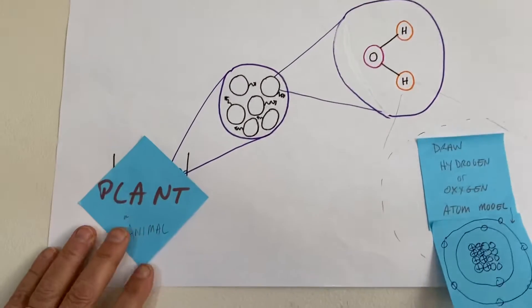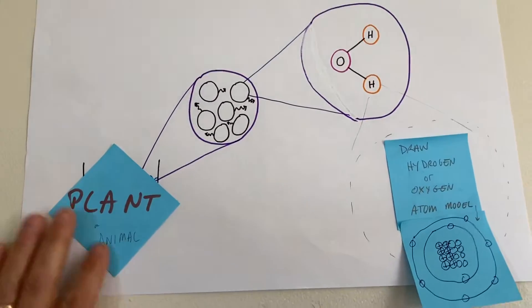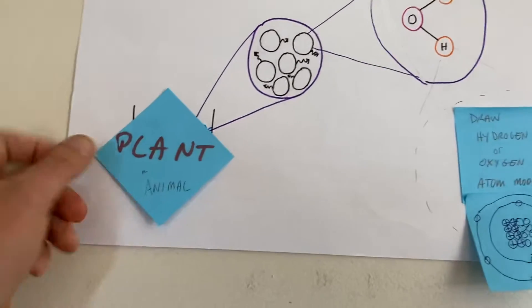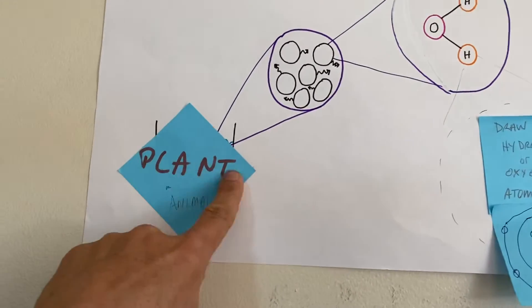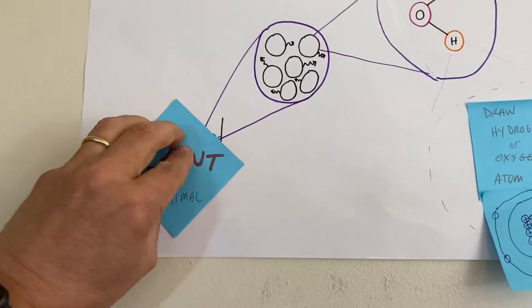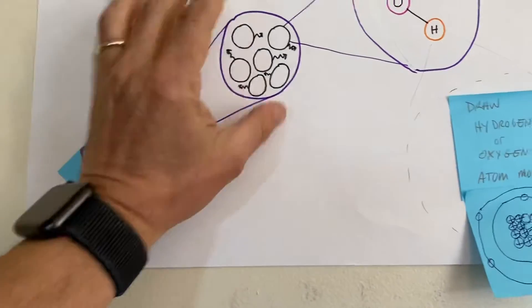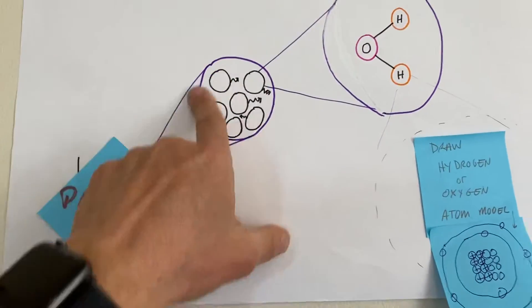For the off-screen reflection, what I was hoping you would do is find a piece of a plant outside, sketch it, zoom in on a little piece, and know that it's made of particles.